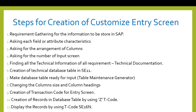The third step is to ask the user about the arrangement of columns — for example, whether the user wants GL code first, then company, then functional area, or a different order. On the fourth step, we will ask the user the number of input screens. We will explore this further after the creation of the single screen.